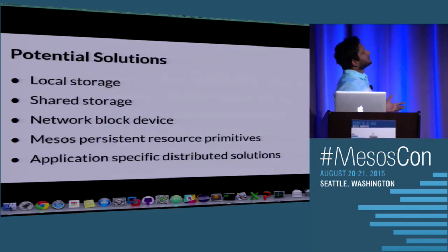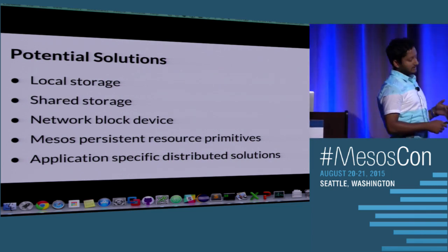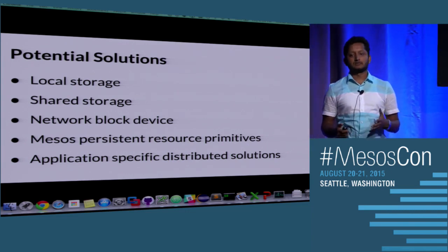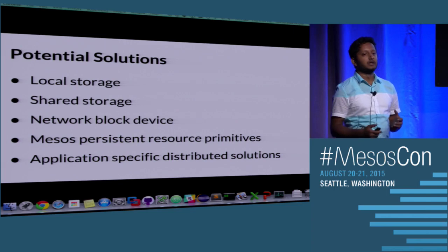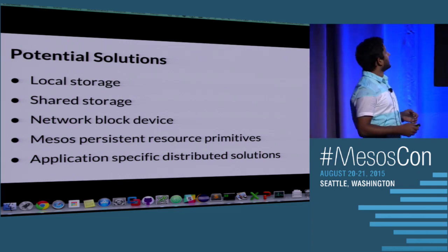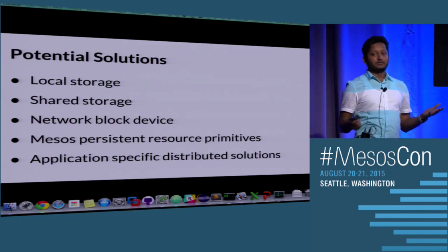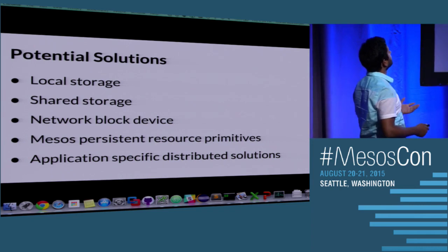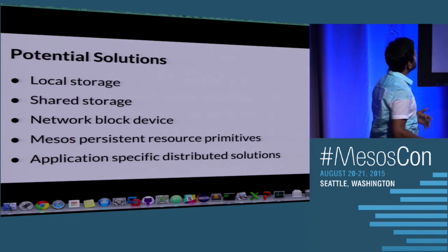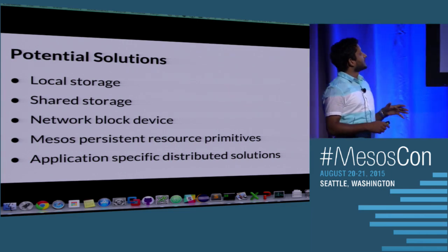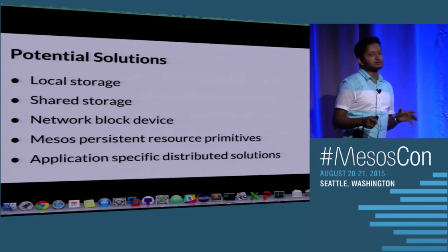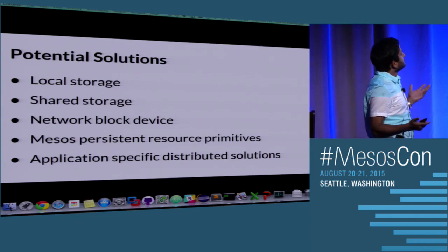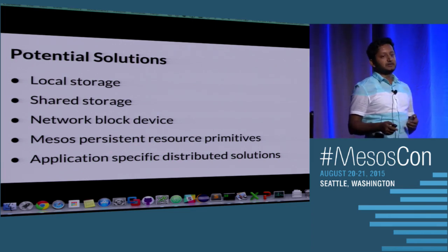What are the potential solutions? We can use local storage — with some challenges to address. We could use shared storage, which many of you may have already done. There's the network block device. There are new features like the Mesos persistent resource primitives that could make things a lot easier. And if all else fails, we look at application-specific distributed systems.